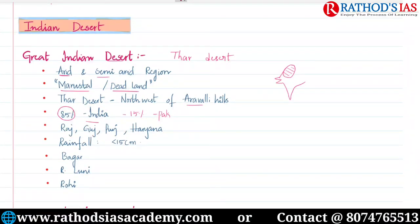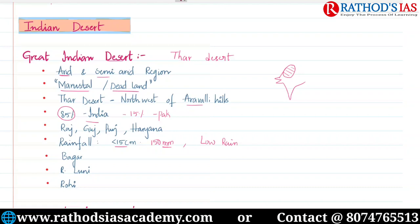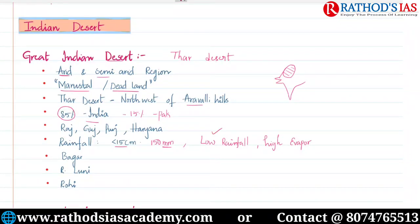This desert of India receives very low rainfall — below 15 centimeters, that is less than 150 mm of rainfall per year. An important feature of the desert is very low rainfall and also very high evaporation. Because of low rainfall and high evaporation, we can see very low vegetation cover in this desert region.